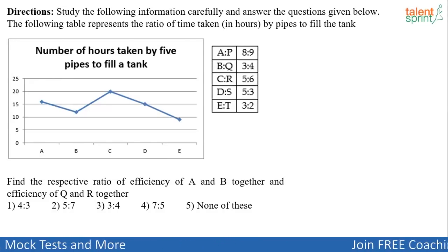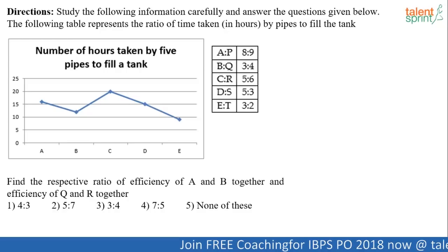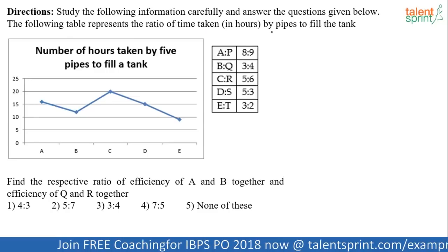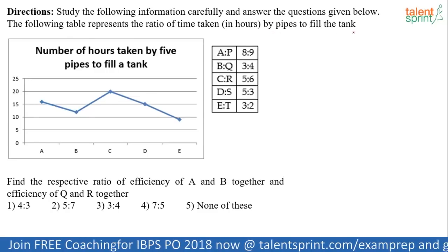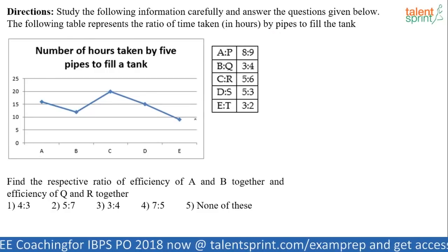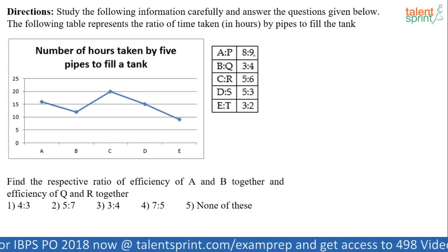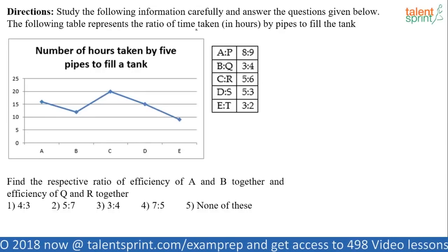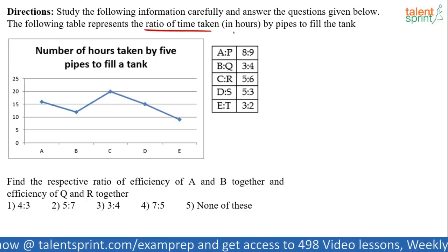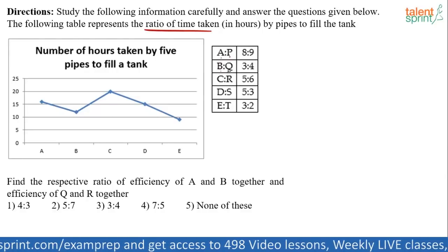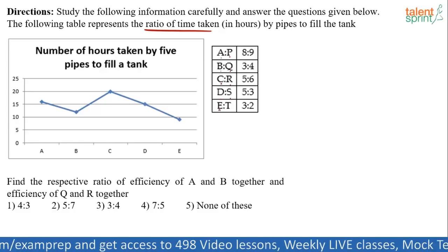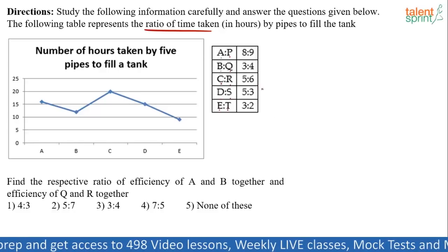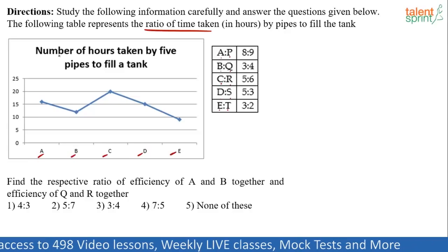All of you solve this first. I think the first one you guys need to solve. So, let's take up these questions now. Here we go. Look at what it says. The following table represents the ratio of time taken in hours by pipes to fill the tank. So, basically, we have one line graph, simple line graph attached with a table. Table represents the ratio of time taken in hours by pipes to fill the tank. So, A is to P, B is to Q, C is to R, D is to S, E is to T. The ratios are given to us. And I think the times of A, B, C, D, E are given here. Number of hours taken by five pipes to fill a tank.